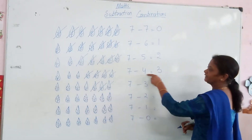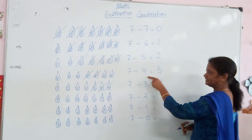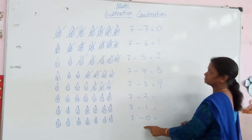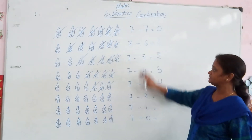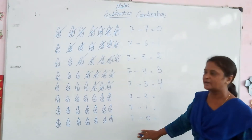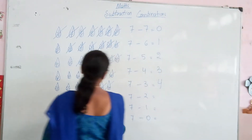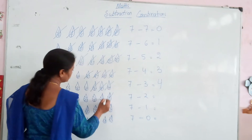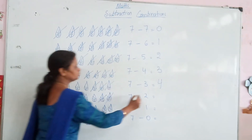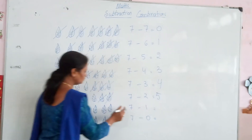Here are the additional sentences and here are the different combinations. Right? 7 can have different combinations of subtraction. 5, this is 2. 1, 2, 3, 4, 5. We will write here: 5.